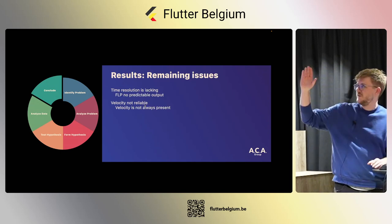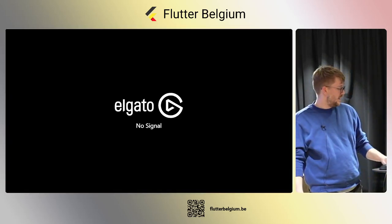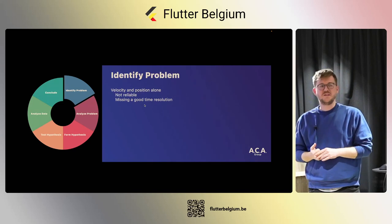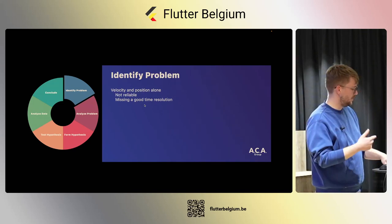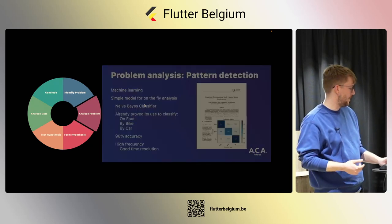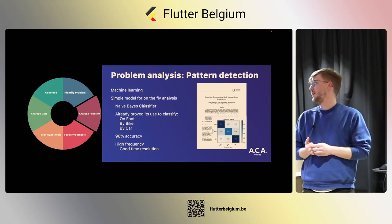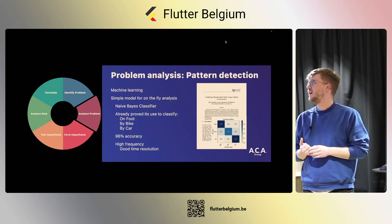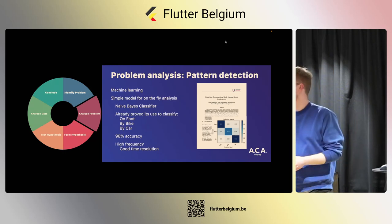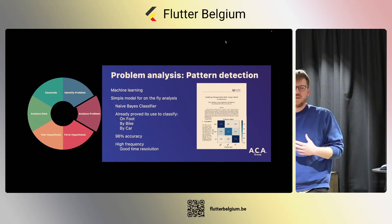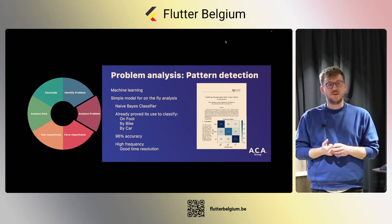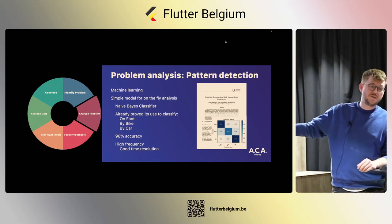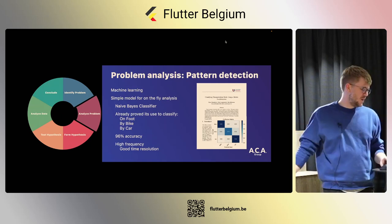We go through the cycle again. The remaining issue is missing good time resolution. At that time, we had a master student at our company doing basic machine learning using a naive Bayes classifier — a probabilistic model to predict outcomes. We had good results using accelerometer data to determine if you're on foot, by bike, or by car, with 96% accuracy. The accelerometer has high frequency and good time resolution, so it looked like a viable path.